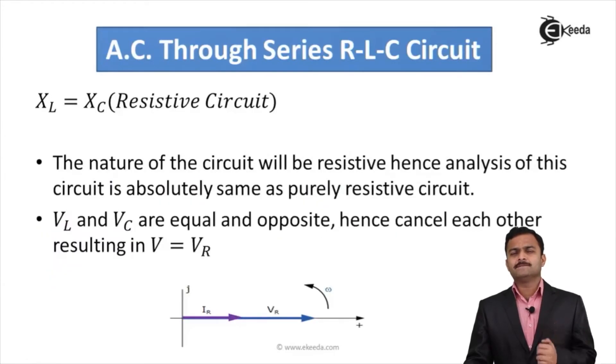Third possibility - suppose xl and xc both are equal. That will give rise to a condition where voltage drop across inductor is same as voltage drop across capacitor. One voltage drop is leading current by 90 degrees for inductive circuit and another voltage drop lagging current by 90 degrees for capacitive circuit. If both are equal, these two will cancel each other.